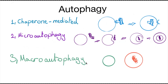There are three different mechanisms through which autophagy can happen. The first type is chaperone-mediated, which is direct translocation across the lysosomal membrane mediated by chaperone protein.